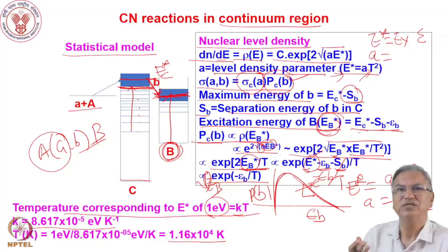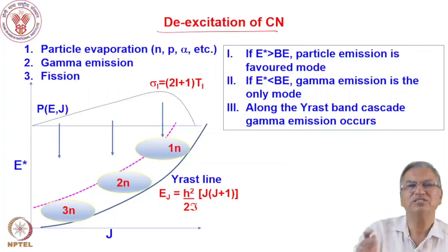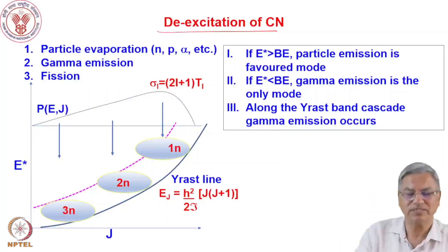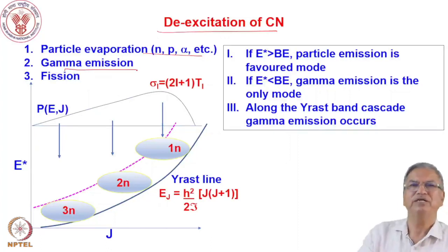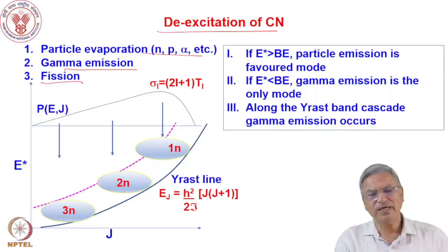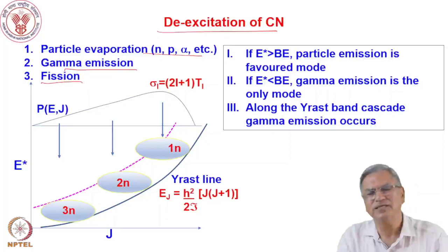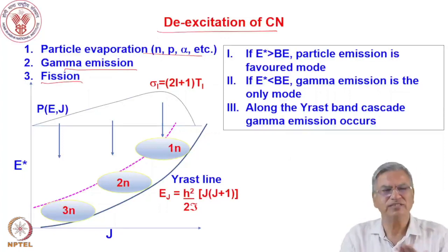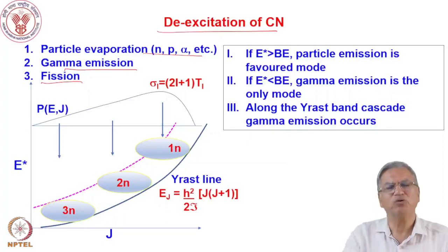This Maxwellian nature of the particle spectra is a signature of compound nucleus decay. If a nuclear reaction produces particles whose spectrum follows this Maxwellian pattern, we say it is the signature of compound nucleus formation. The compound nucleus has different decay pathways: neutron, proton, alpha emission, gamma ray emission, and for heavy nuclei even fission. Whichever process can carry away the largest amount of angular momentum and excitation energy will be more favored.